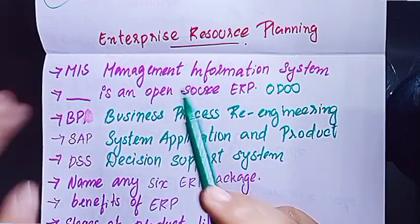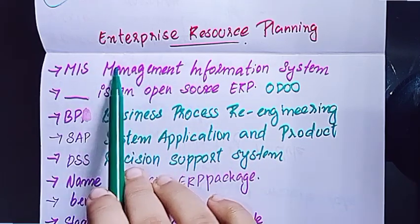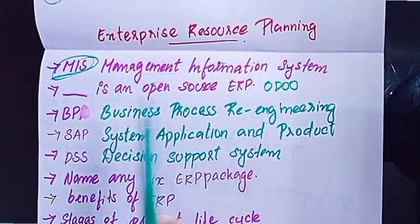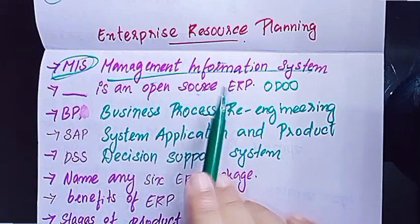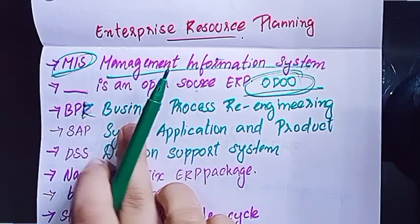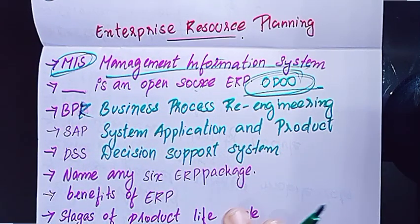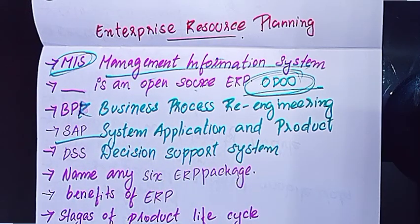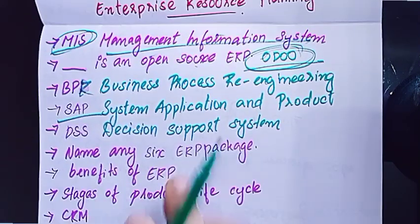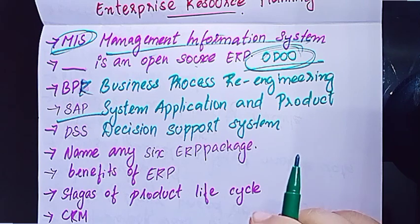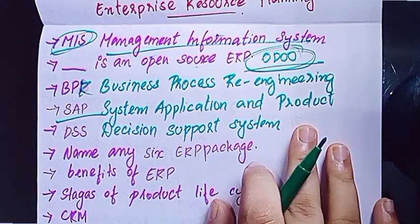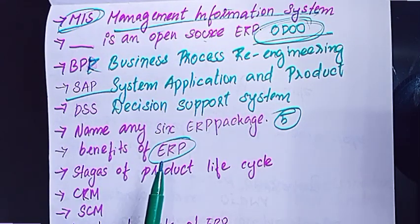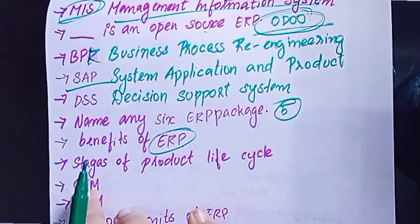Enterprise Resource Planning. Management Information System — MIS. TASH is an open source software. BPR — Business Process Re-Engineering. SAP — System Application Product. DSS — Decision Support System. There are six ERP packages. The benefits of ERP and the enterprise resource planning, ERP, stages of product life cycle.